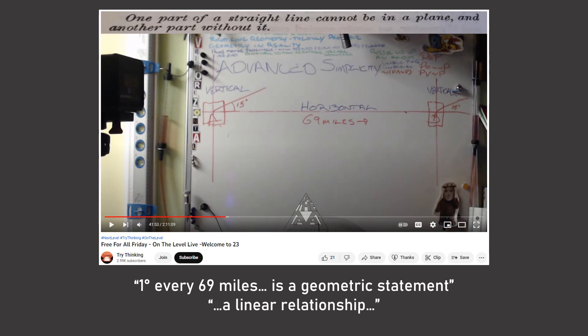In part one, I took a look at Bev's claim that one degree every 69 miles is a geometric statement in a linear relationship.